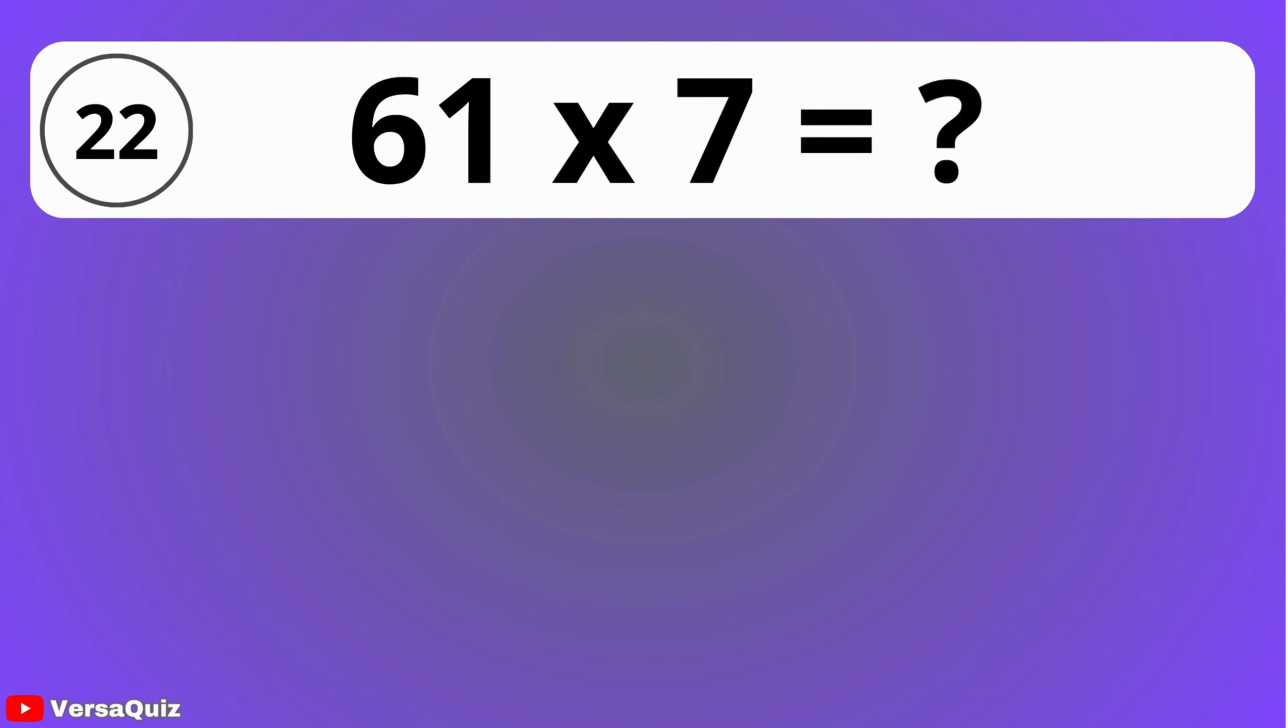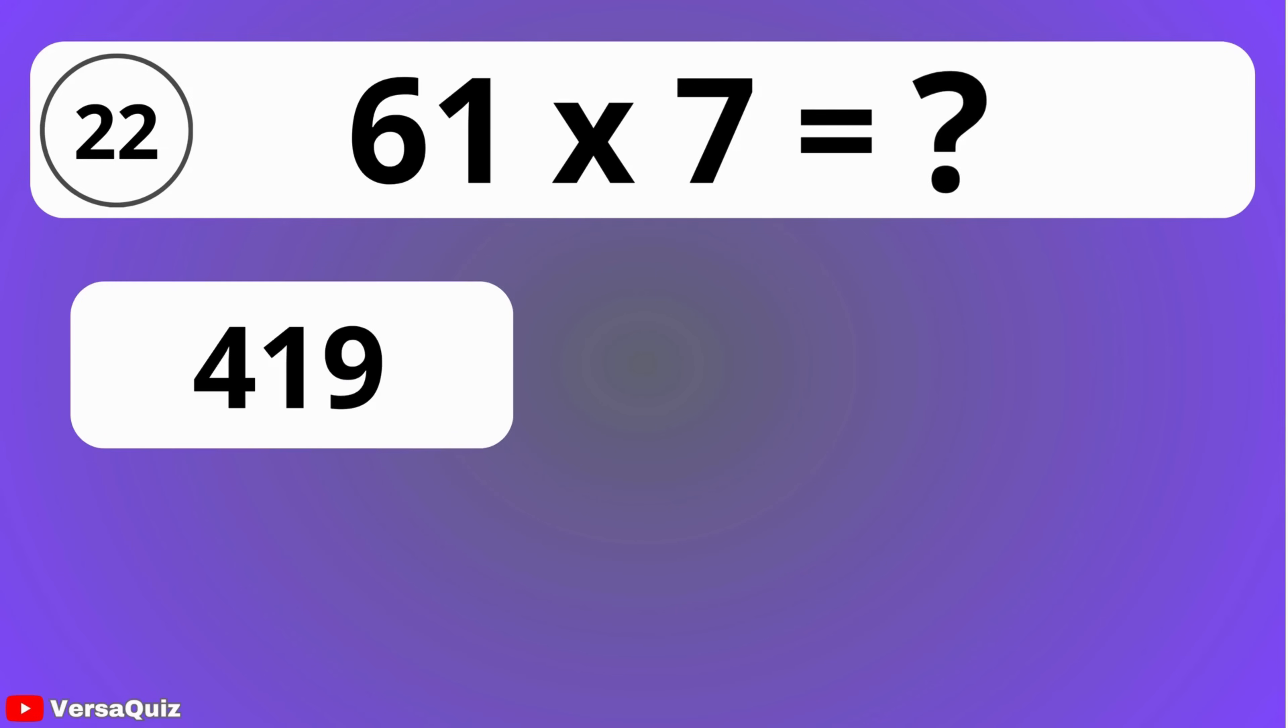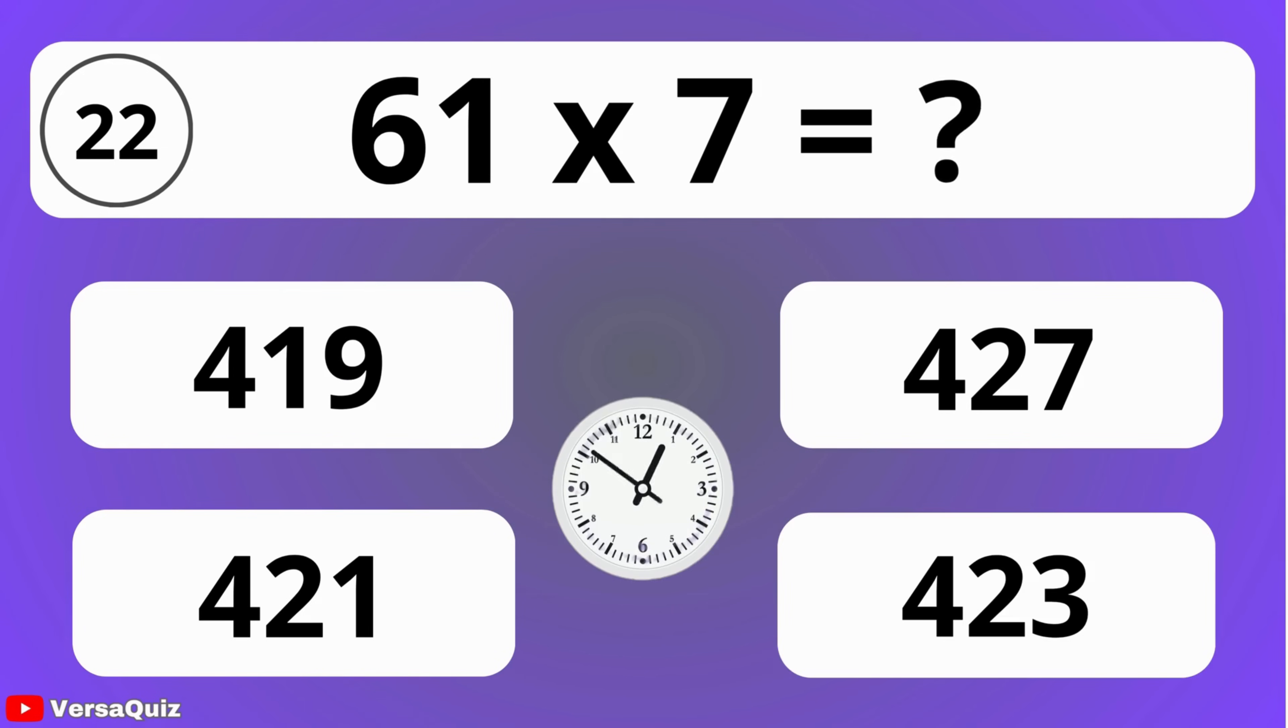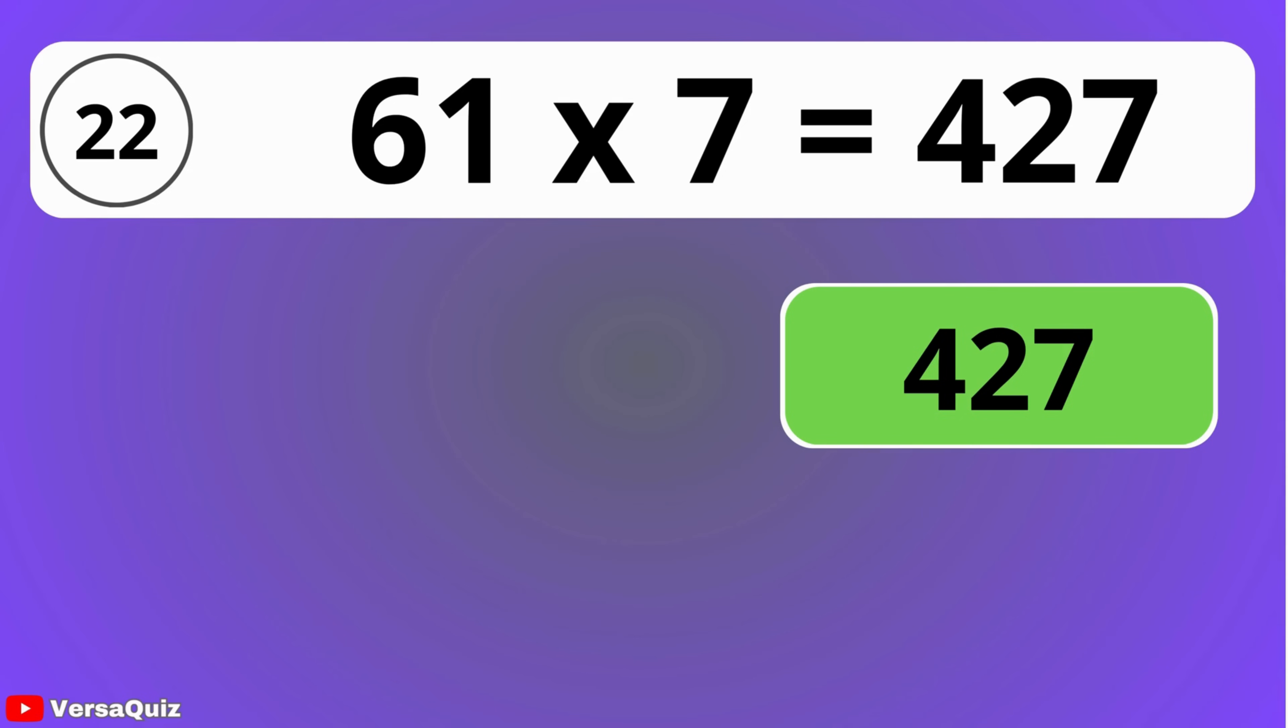What is 61 times 7? Within the next 7 seconds, make your choice from the available options. 61 multiplied by 7 is equal to 427.